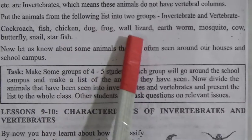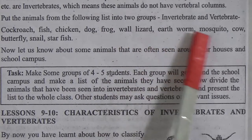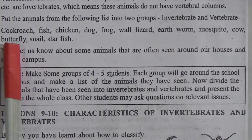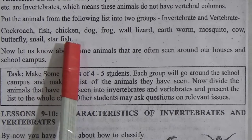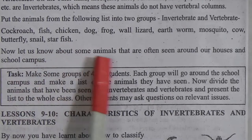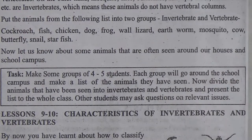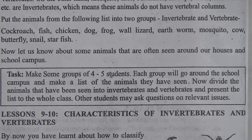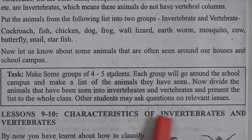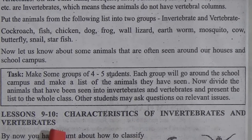Now put the animals from the following list into two groups — invertebrates and vertebrates: cockroach, fish, chicken, dog, fox, wild lizard, earthworm, mosquito, cow, butterfly, snake, starfish. Observe the animals around your house and school campus and differentiate which are vertebrates and which are invertebrates. Now lesson number 9: characteristics of invertebrates and vertebrates.